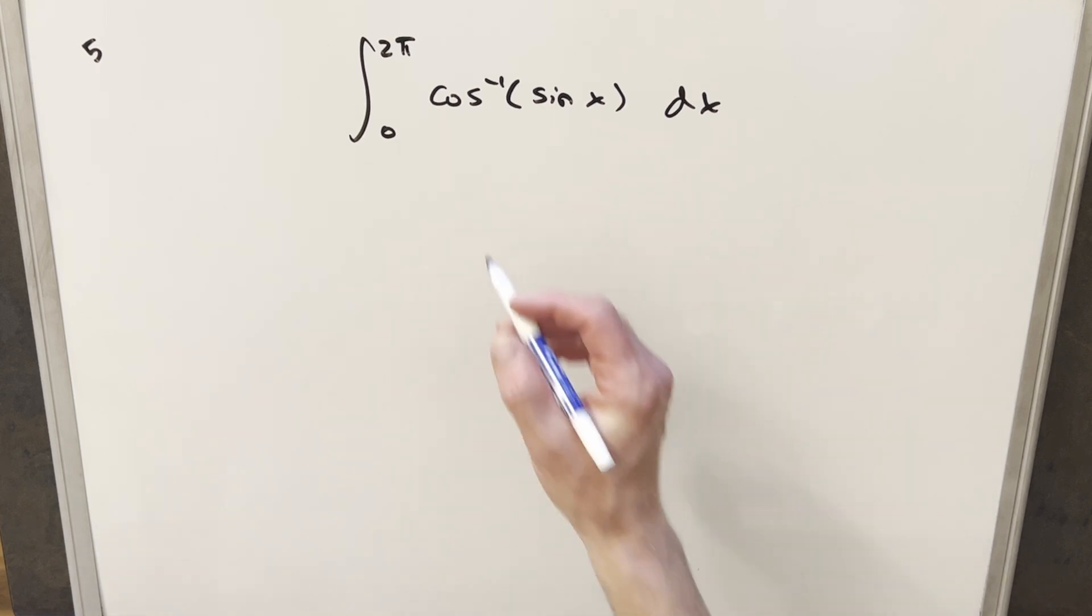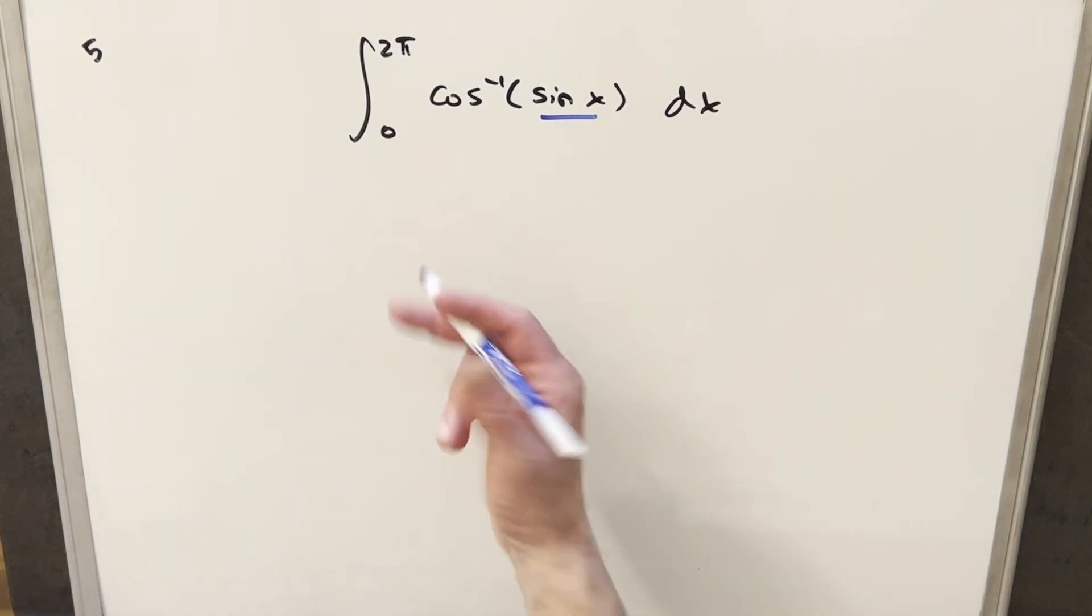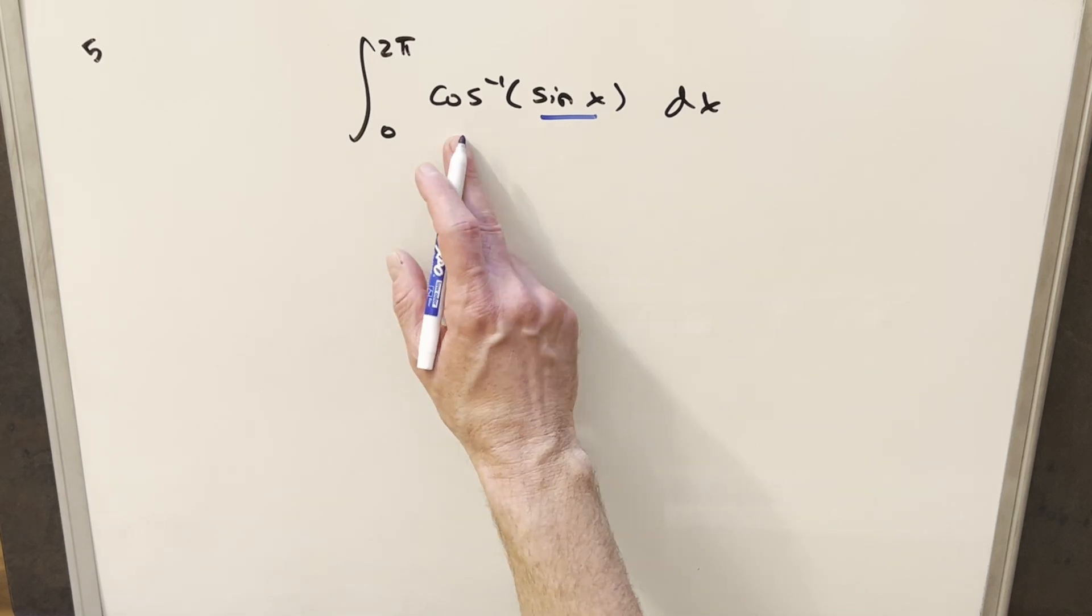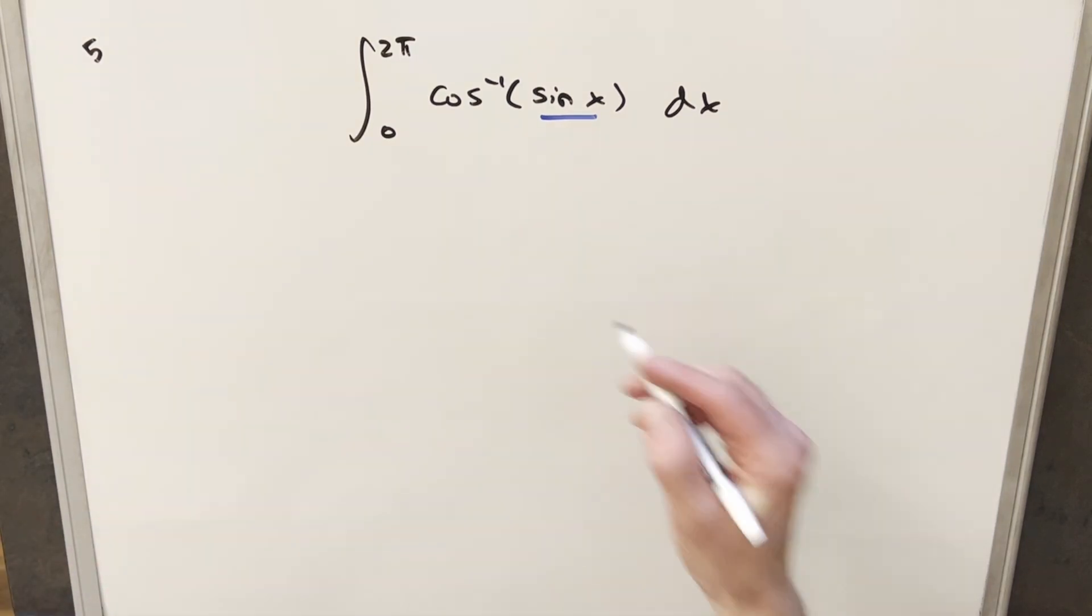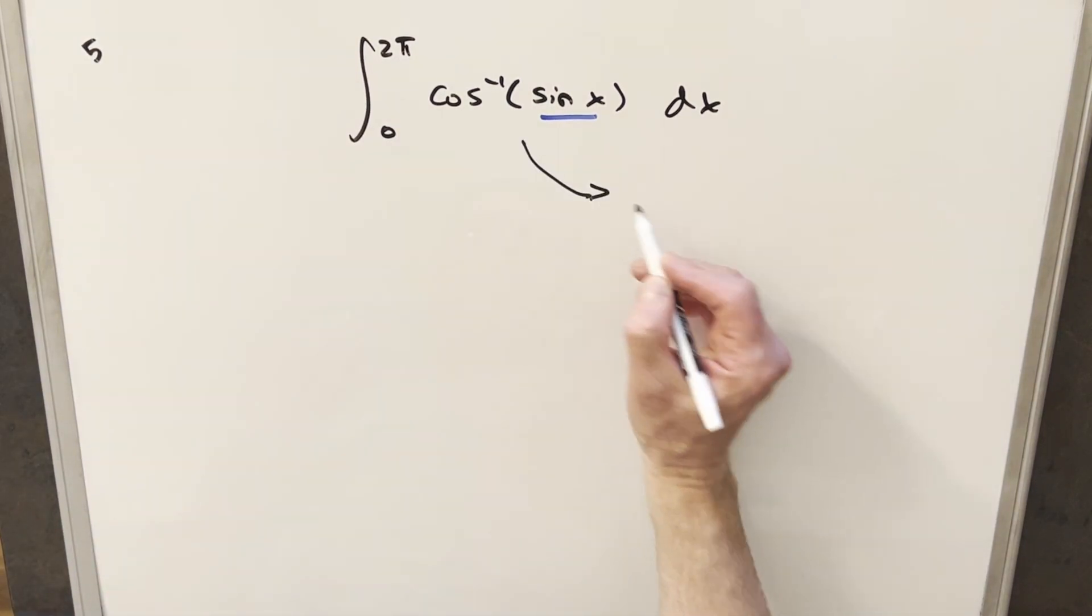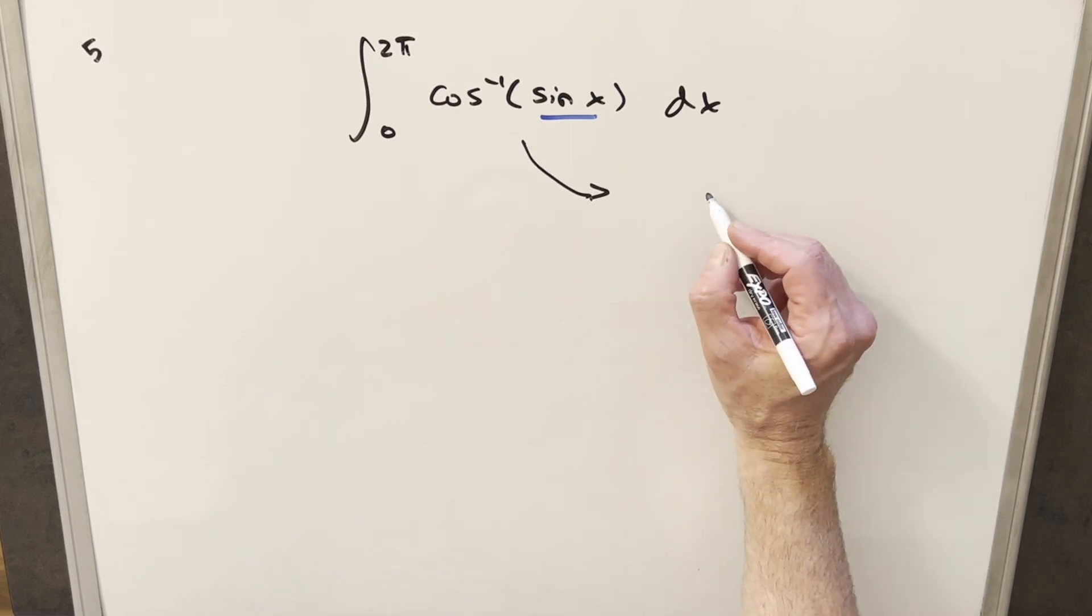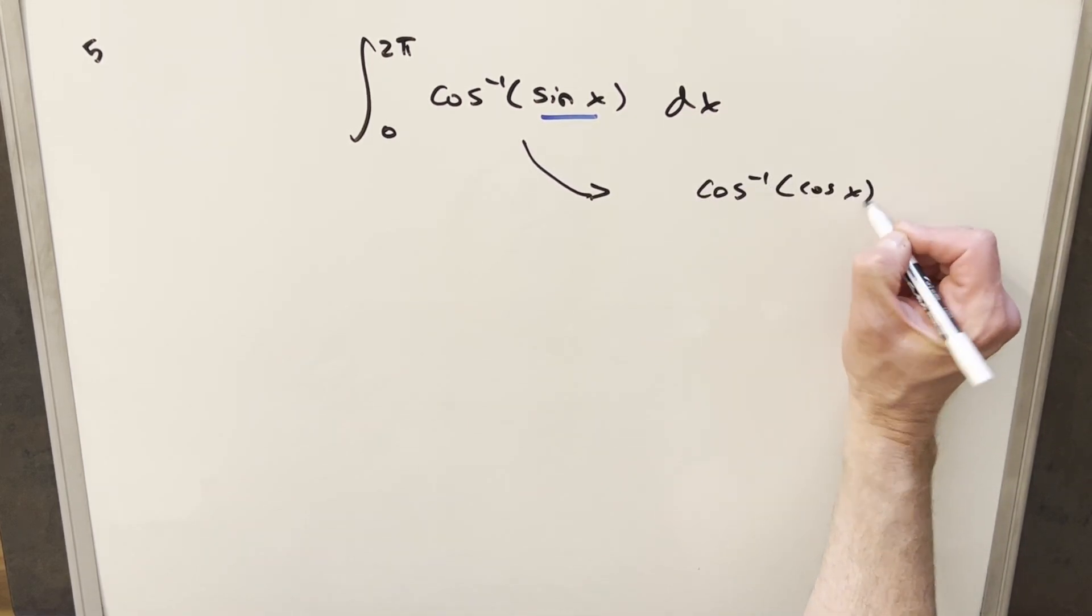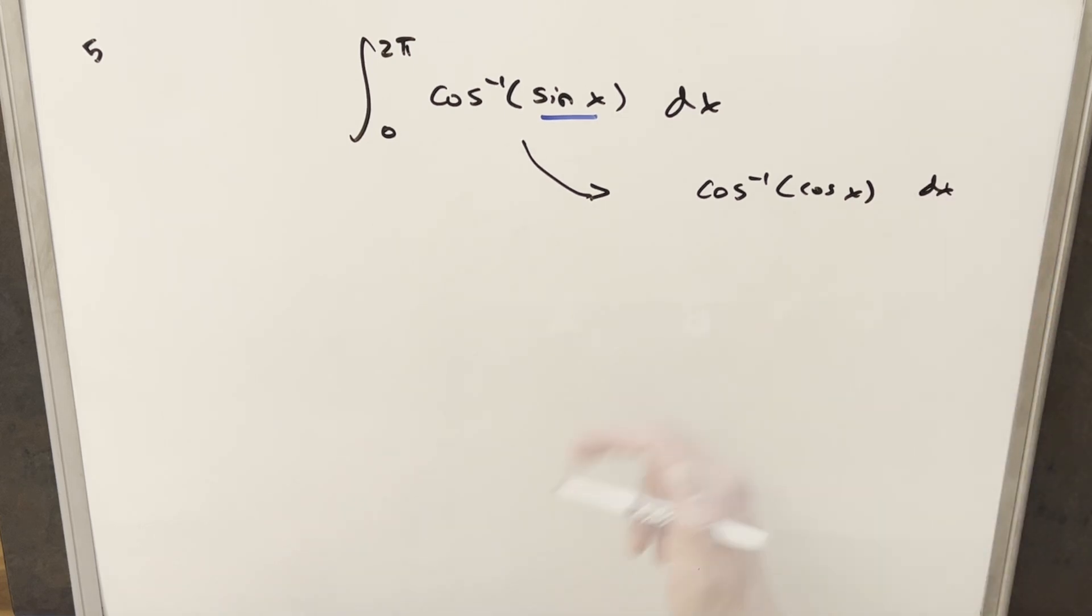Okay, the first problem I noticed with this is just kind of having sine inside of the arcosine. It'd be great if it was cosine here or if it was arcsine out here. What I would really like to happen, kind of some wishful thinking here, is if we had arccos(cos x) dx. Because the nice thing about this expression is this is actually x, but only some of the time.